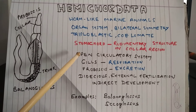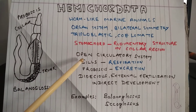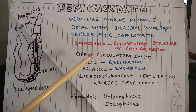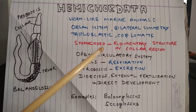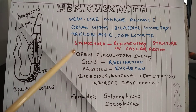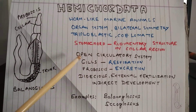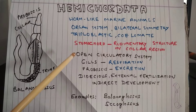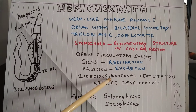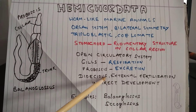The circulatory system is open and respiration is through gills. Excretion happens through the proboscis. As far as reproduction is concerned, these are dioecious animals, which means the male and female animals are different. Fertilization is external, so it takes place outside the body of the animal.